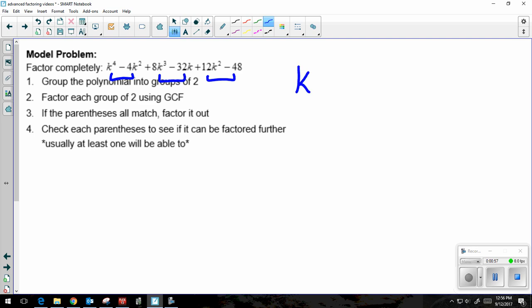So if I look at the first two, k to the fourth minus 4k squared, I can take out a GCF of k squared, and when I do that, I'm left inside with k squared minus 4. Now I'm going to look at the next two, 8k to the third minus 32k.